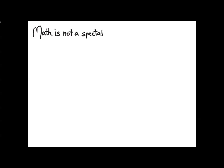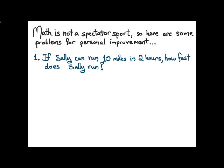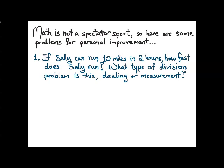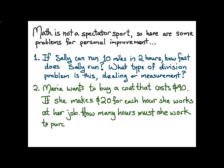Now mathematics is not a spectator sport, so I want to leave you with some problems for personal improvement. The first one is if Sally can run 10 miles in 2 hours, how fast does Sally run? After you've answered this question, you can decide what type of division is this? Is it a dealing division problem or is it a measurement division problem? And in the second question, Maria wants to buy a coat and the coat costs her $90. If she makes $20 for each hour that she works at her job, how many hours does she have to work in order to purchase the coat? And again, after you've solved the problem, determine what type of division is this? Is it dealing or is it measurement?